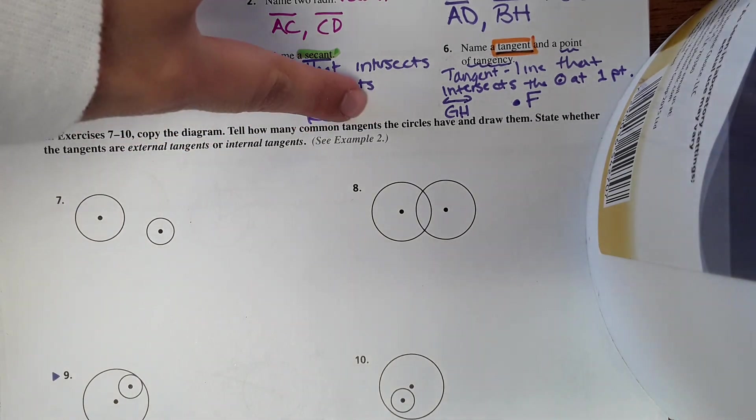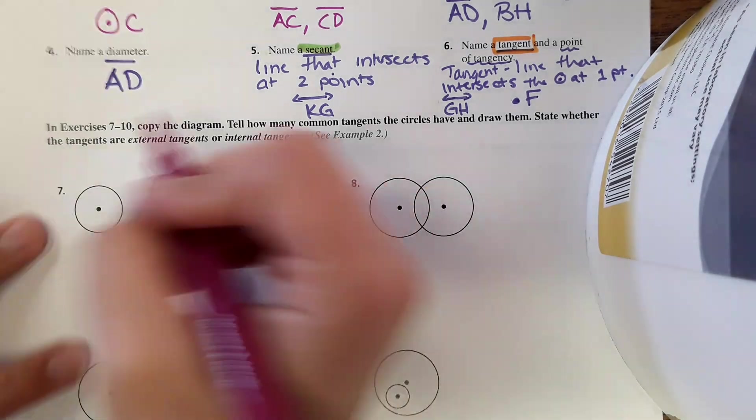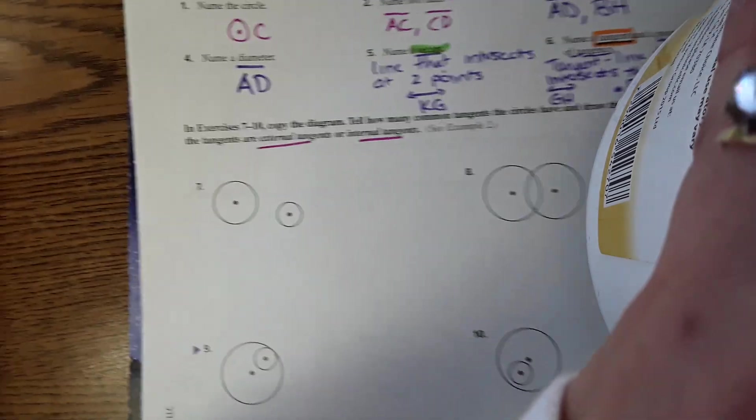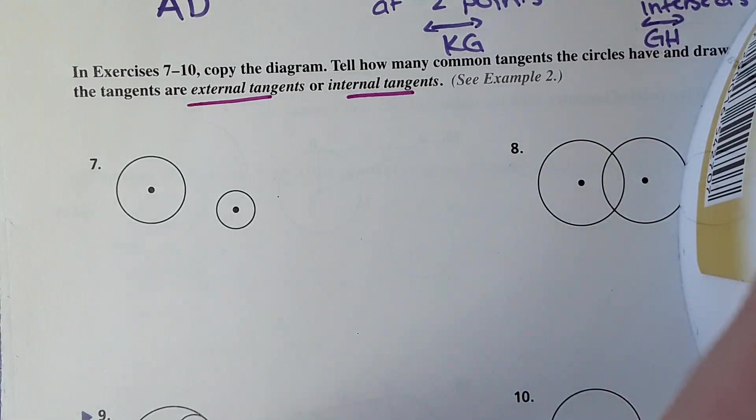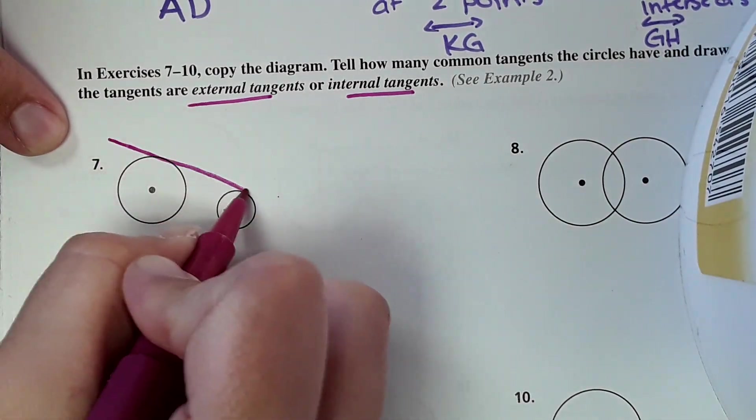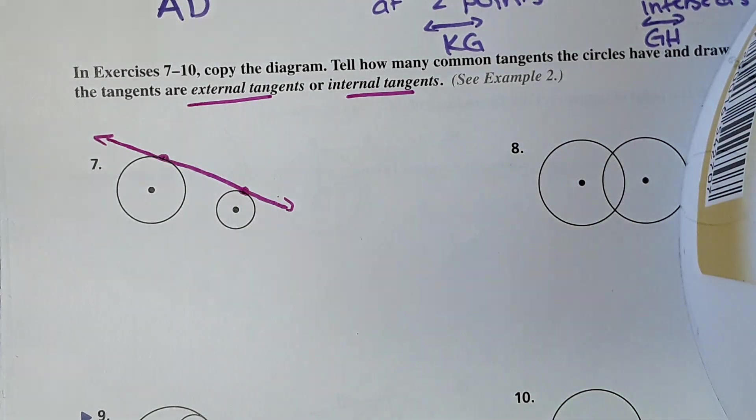So I'll just quickly go over this. Tell how many common tangents the circles have and draw them. State whether the tangents are external or internal. So a tangent is a line that intersects the circle once, but they're wondering which tangents these guys have in common. So for example, if I was to draw a line like this, it would hit both of these at one point. So that would be a tangent line they have in common.